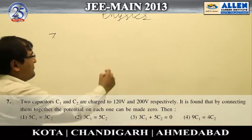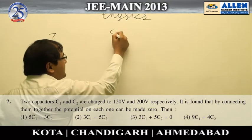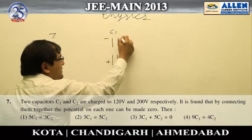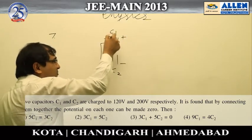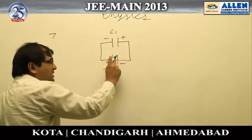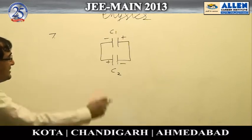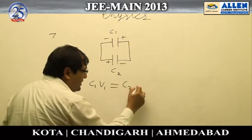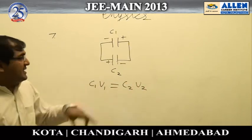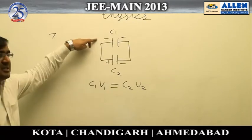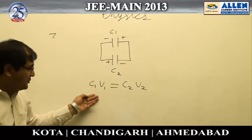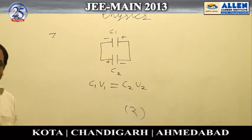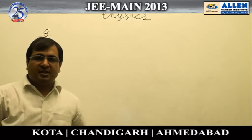Question number seven involves two capacitors, C1 and C2, connected such that the negative plate of one is connected to the positive plate of the other. The charge on the first capacitor is C1V1 and on the second is C2V2. When connected, the net charge becomes zero, meaning these charges must be equal. Substituting the given voltage values gives option number two as the answer.